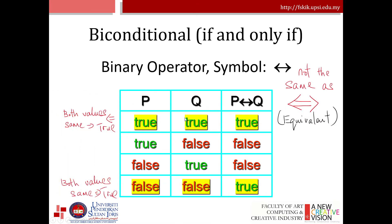Next we have the bi-conditional — if and only if. The symbol is not the same as the equivalence symbol. The bi-conditional connective connects two statements where either both statements are true or both statements are false. As you can see: true and true is true, true and false is false, false and true is false, and false and false is equivalent to true.